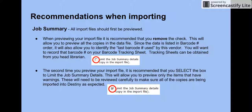For your job summary, all import files should first be previewed. When previewing your import file, it is recommended that you remove the check. This will allow you to preview all the copies in the data file. Since the data is listed in barcode number order, it will also allow you to identify the last barcode number used by this vendor. You will want to record that barcode number on your barcode tracking sheet. Tracking sheets can be obtained from your head librarian.